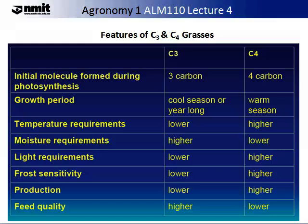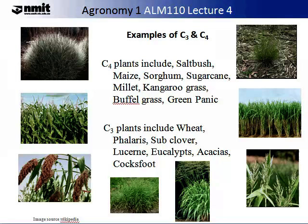To summarise, there are many advantages and disadvantages of C3 and C4 plants, and whether these attributes are advantages or disadvantages really depends on the environment, the climate, and the commodity requirements that you are after. Some examples of C4 plants include saltbush, maize, sorghum, sugar cane, millet, kangaroo grass, buffalo grass, and greenpanic grass. The C3 family includes wheat, beryllus, sub-clover, leucine, eucalypt, atias, and coxfoot. If you have some time, you might want to try and identify which of the plants listed are illustrated in the figure.